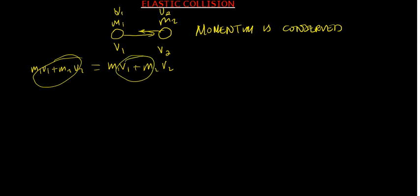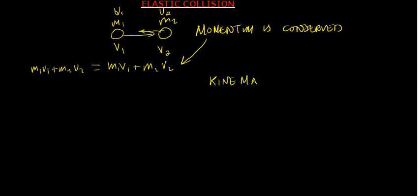This is momentum before impact equal to momentum after impact — this is from conservation of momentum. When talking about elastic collision, another thing that is conserved is kinetic energy. Energy is always conserved, but not kinetic energy — kinetic energy is only conserved for elastic collision. For inelastic collision, some kinetic energy is converted to other forms like friction, heat, or sound. So the kinetic energy of the first ball before impact plus that of the second ball should equal their sum after impact.